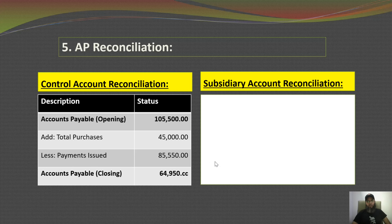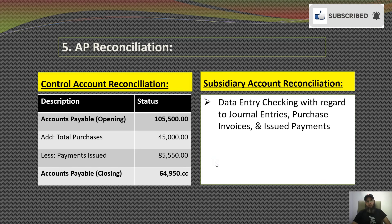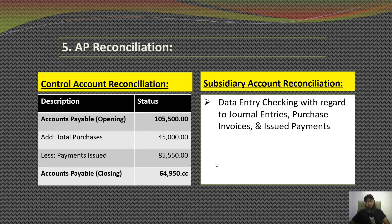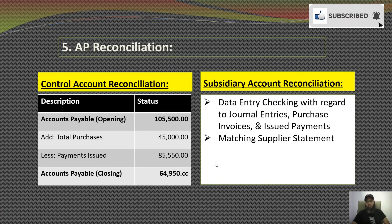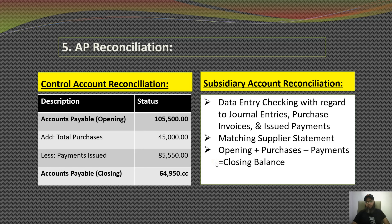For the subsidiary account reconciliation, first check all data entries — general entries for supplier accounts, payables, expenses, purchase invoices, issued payments, and credit notes — to ensure everything is perfect with no mistakes. Secondly, ask the supplier to provide their statement of account, then match your statement against the supplier's statement. If there are any differences, correct them. Finally, for each subsidiary ledger, apply the same formula: opening balance plus purchases minus payments gives the closing balance for the current month.